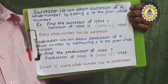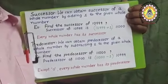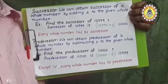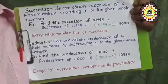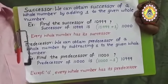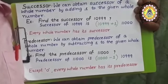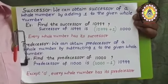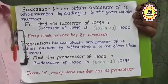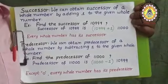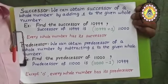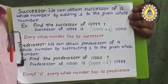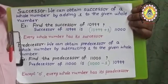By finding the successor and predecessor of whole numbers: successor means by adding 1 to the given whole number; predecessor means by subtracting 1 from the given whole number. Every whole number has a successor. Except 0, the remaining whole numbers have a predecessor. Because in whole numbers, 0 has no predecessor — the predecessor of 0 would be minus 1, and there are no negative numbers in the whole number set. So in whole numbers, except 0, all whole numbers have a predecessor.